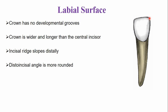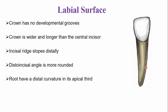There are two angles: the mesio-incisal angle and the disto-incisal angle. The disto-incisal angle is more rounded compared to the mesio-incisal angle. Looking at the root, in the apical third part there is a slight curvature of the root towards the distal side.